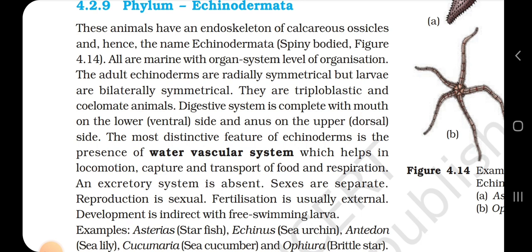An excretory system is absent. Sexes are separate. Reproduction is sexual; fertilization is usually external. Development is indirect with free-swimming larvae. Examples: Asterias (starfish), Echinus (sea urchin), Antedon (sea lily), Cucumaria (sea cucumber) and Ophiura (brittle star).